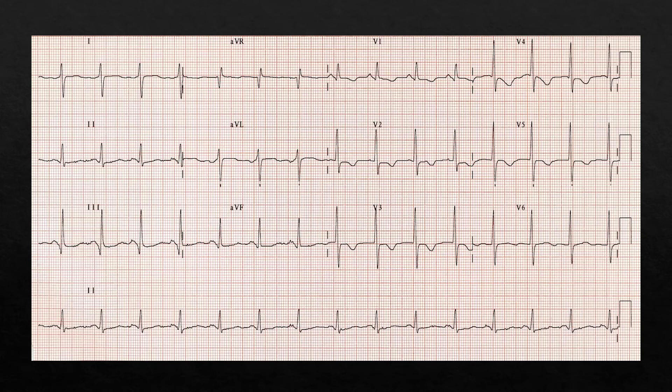For those who love S1Q3T3: yes, this ECG does have an S wave in lead I, a Q wave in lead III, and T-wave inversion in lead III — so it does meet that criteria as well. But when you look at the aggregate data, seeing that pattern only meant PE 2 out of 10 times.